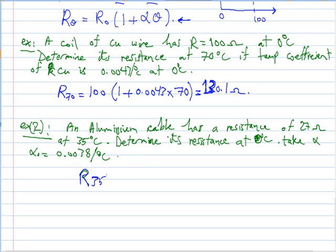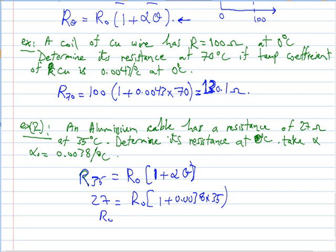Here, R at 35 degrees equals R₀ multiplied by 1 plus alpha theta, which is 27 ohm equals R₀ times 1 plus 0.0038 multiplied by 35. From this we can find R₀, which is 27 over 1.133, and this gives 23.83 ohm. So as the temperature decreases, the resistance decreases; as the temperature increases, the resistance increases.